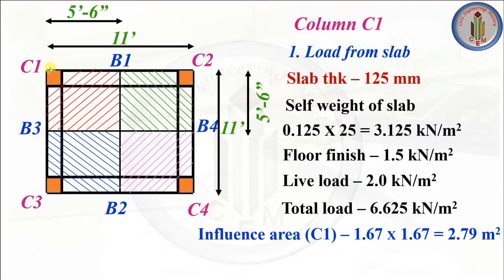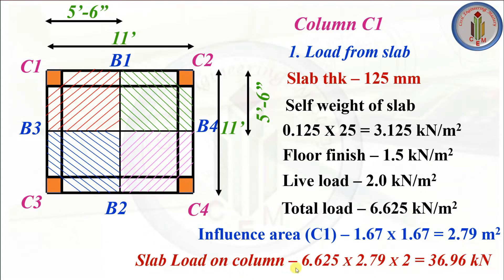For the influence area: column C1 has an area of 5 feet 6 inches by 5 feet 6 inches, which is 2.79 m². The slab load on the column equals total load multiplied by area, multiplied by 2 since we have two slabs (two floors). So the total slab load on column C1 is 36.96 kN.